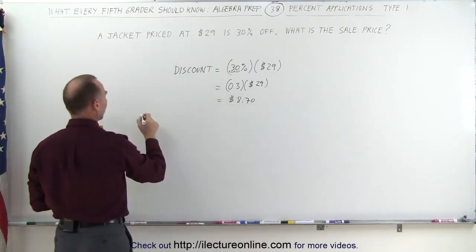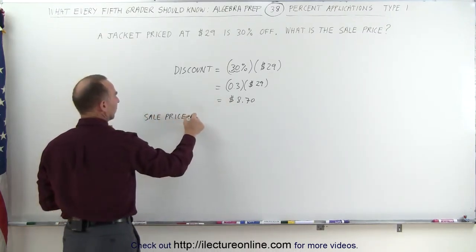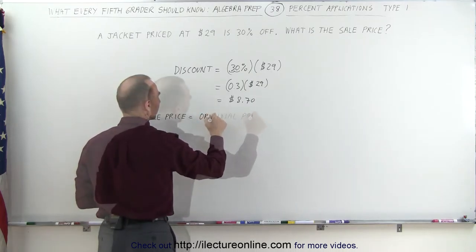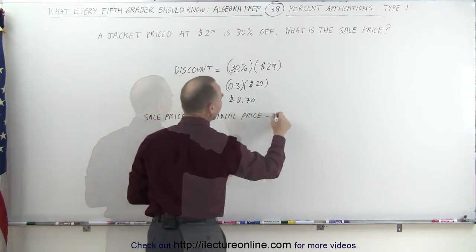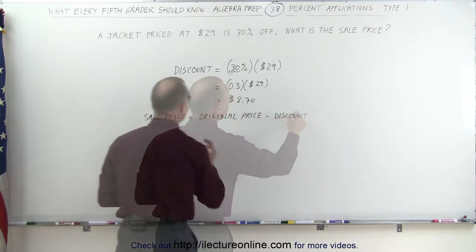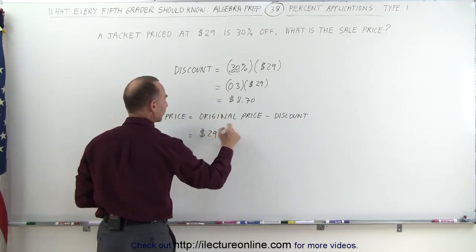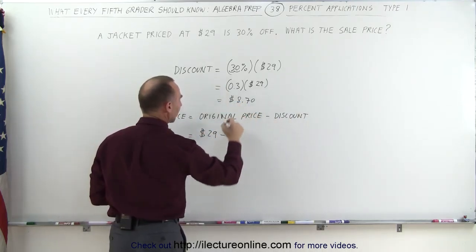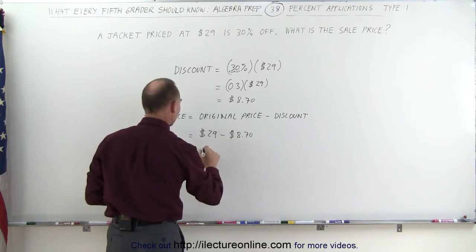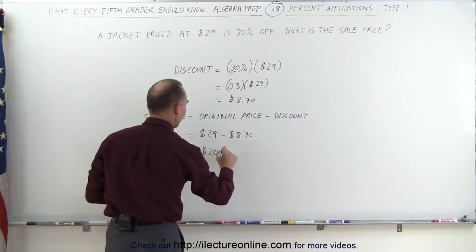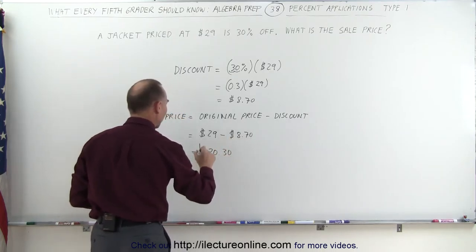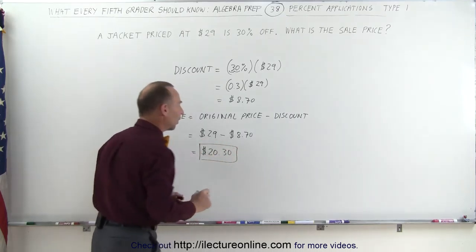Then the sale price is equal to the original price minus the discount. In this case the original price is $29. We subtract from that the discount which is $8.70 and 29 minus $8.70 is equal to $20.30. And that then becomes the sale price.